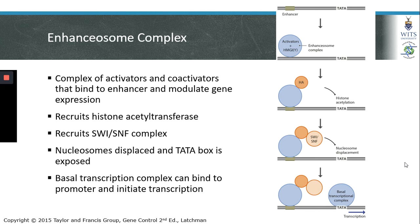Here's an example of how the enhancer zone complex may act to promote gene expression. The enhancer zone complex contains both activators and co-activators that bind to the enhancer region and increase gene expression. In this example, the enhancer zone complex can recruit a histone acetyltransferase that is involved with reducing histone-DNA contacts. A SWI/SNF complex is then recruited to the enhancer zone after histone acetyltransferase binding. The SWI/SNF complex then modifies nucleosomes upstream of the target gene. Displacement or sliding of the nucleosome at the enhancer site leads to exposure of the TATA box, which allows for basal transcription complex binding and transcription initiation.